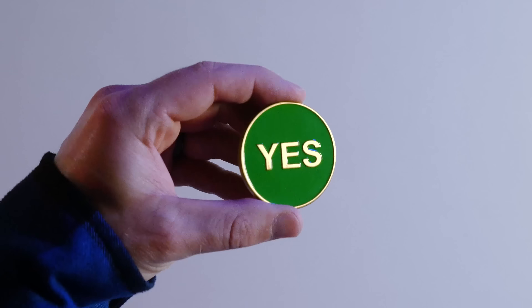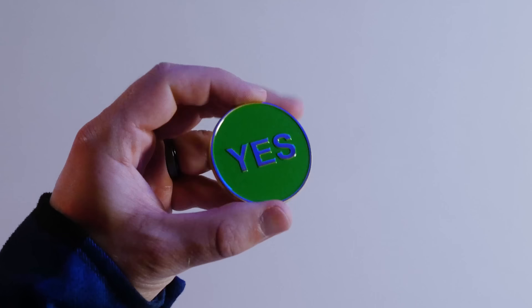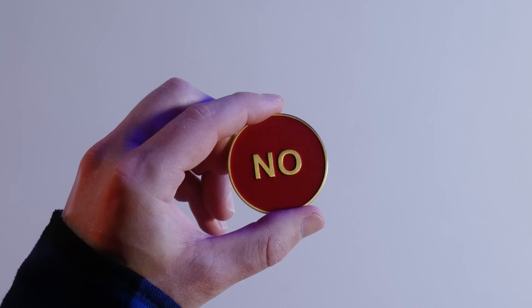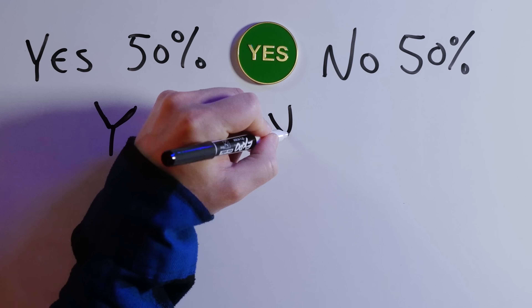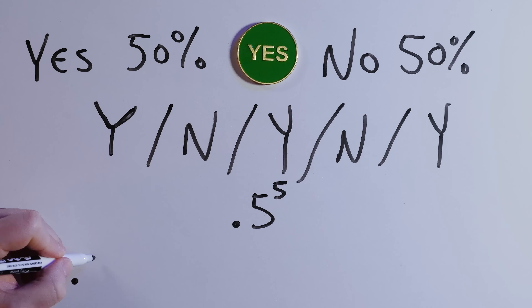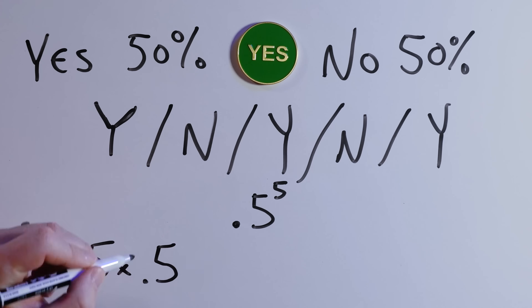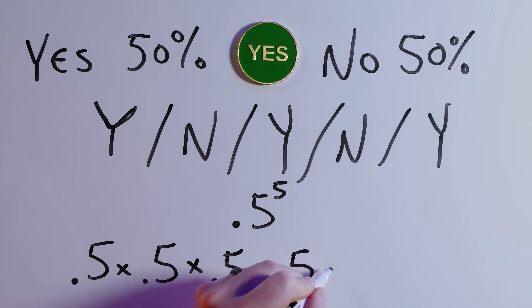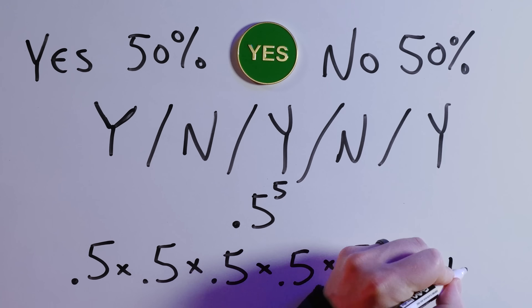Let's start with coin flips, the probability of which is perfectly quantifiable. I've got a coin with yes on one side and no on the other. The odds of getting a yes or no are 50-50, other than the 1 in 5000 chance that it lands on its edge. The odds of getting yes, no, yes, no, yes are .5 raised to the power of 5, or .5 times .5 times .5 times .5 times .5 equals .03125.